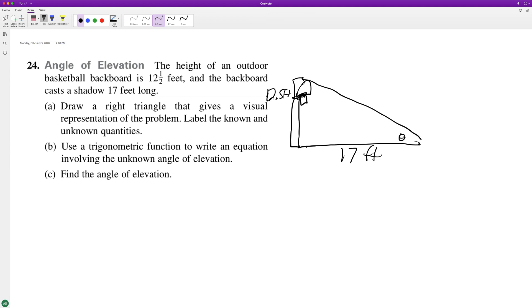We have 17 feet and 12.5 feet. We need to use a trigonometric function to write an equation involving the unknown angle. So this is going to be tangent. It's going to be tangent of theta - this is our part B - equals 12.5 feet over 17.